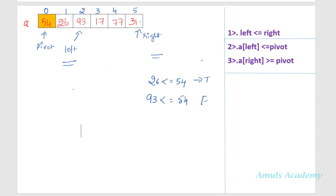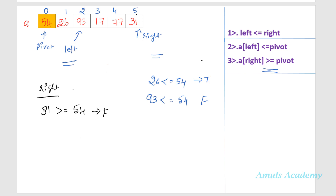Now I go to the right side and check the values. I check whether left is less than or equal to right — yes, right value is greater. I check the value at right: is 31 greater than or equal to pivot 54? On the right side we want a value greater than the pivot. Is 31 greater than or equal to 54? No, condition is false, so I stop here. On the left side we got a value greater than pivot, and on the right side we got a value less than pivot, so we need to swap 93 and 31.